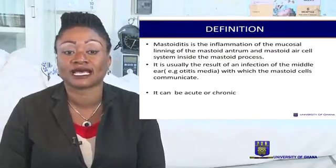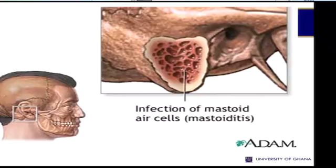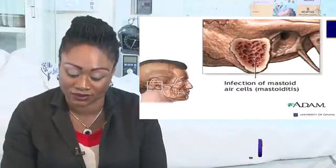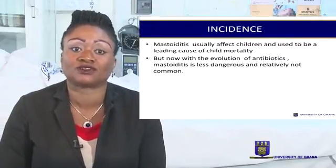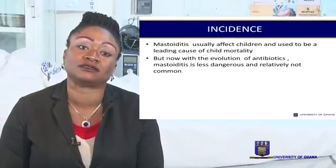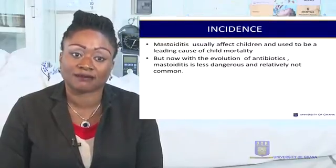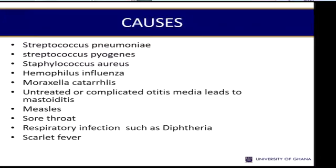Mastoiditis can be acute or chronic. It usually affects children and it used to be a leading cause of child mortality. Now with the evolution of antibiotics, mastoiditis is less dangerous and relatively not as common as it used to be.